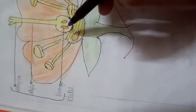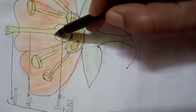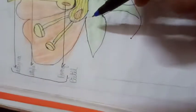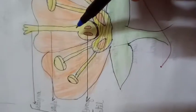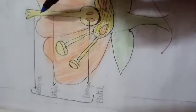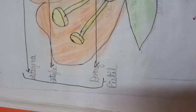And this basal swollen part is called ovary. O-V-A-R-Y, ovary. And this long tube-like part, this is called style. S-T-Y-L-E, style.